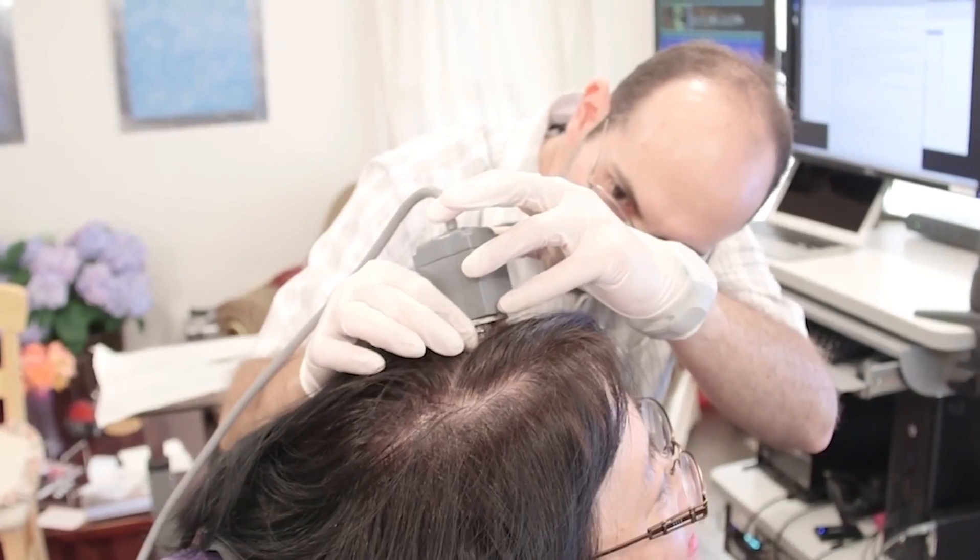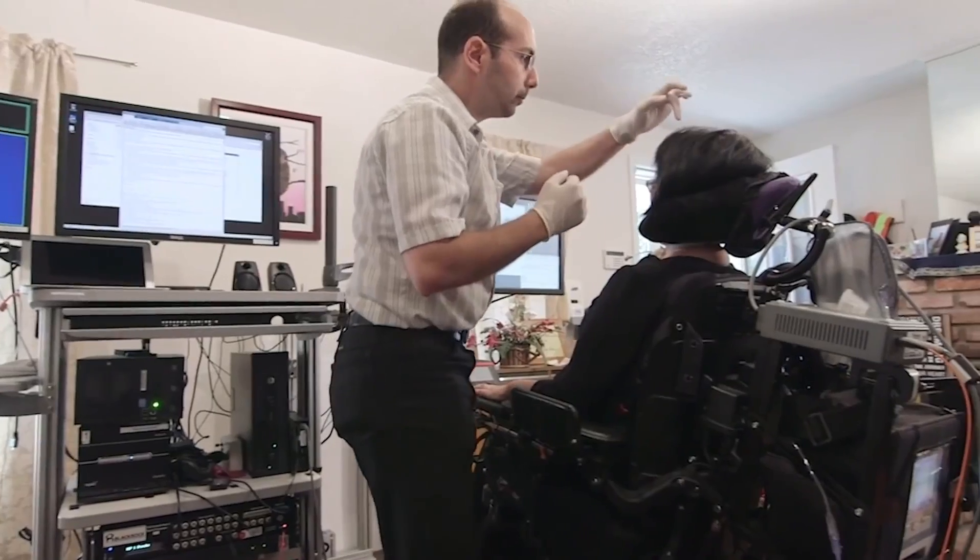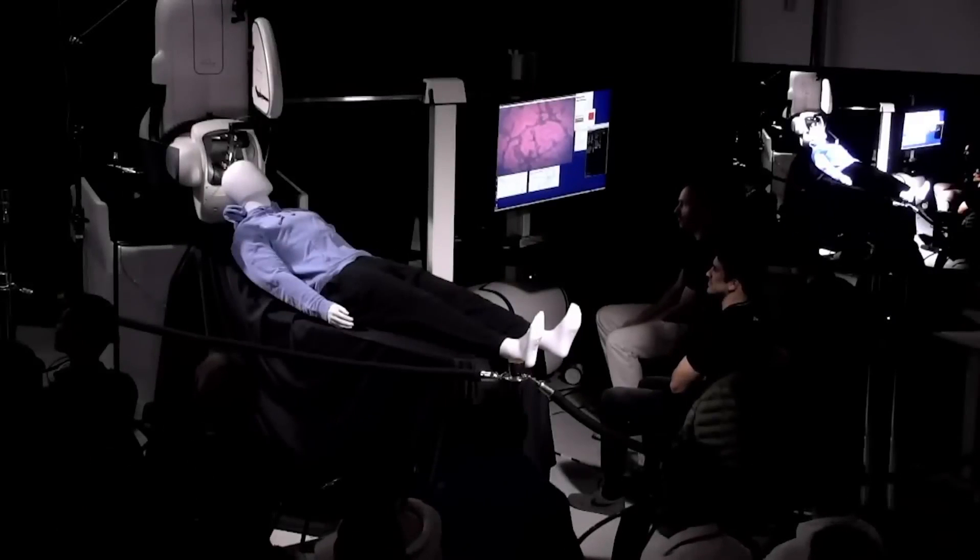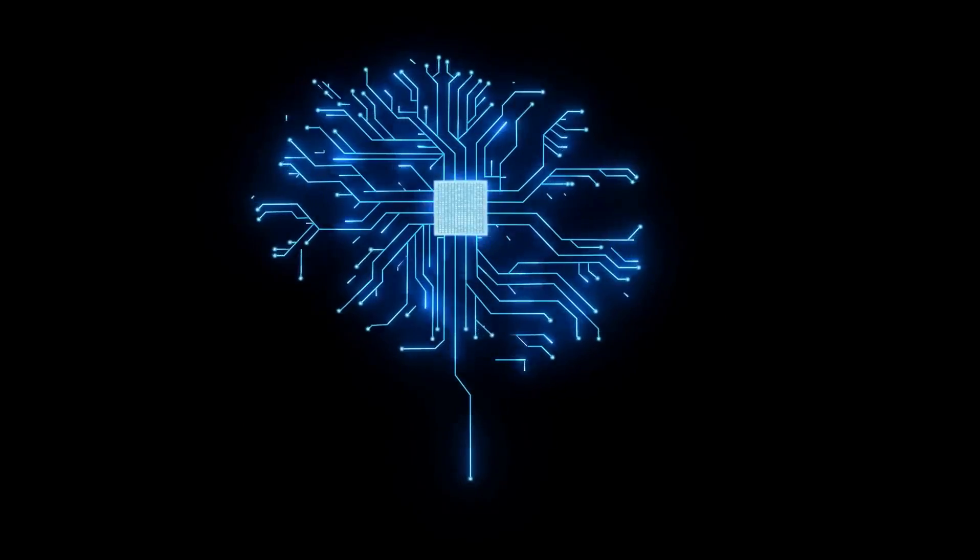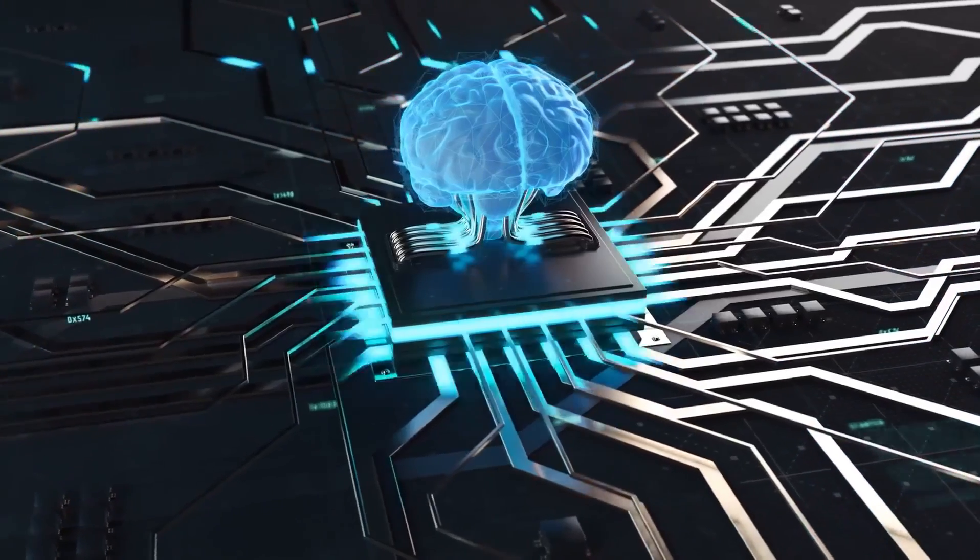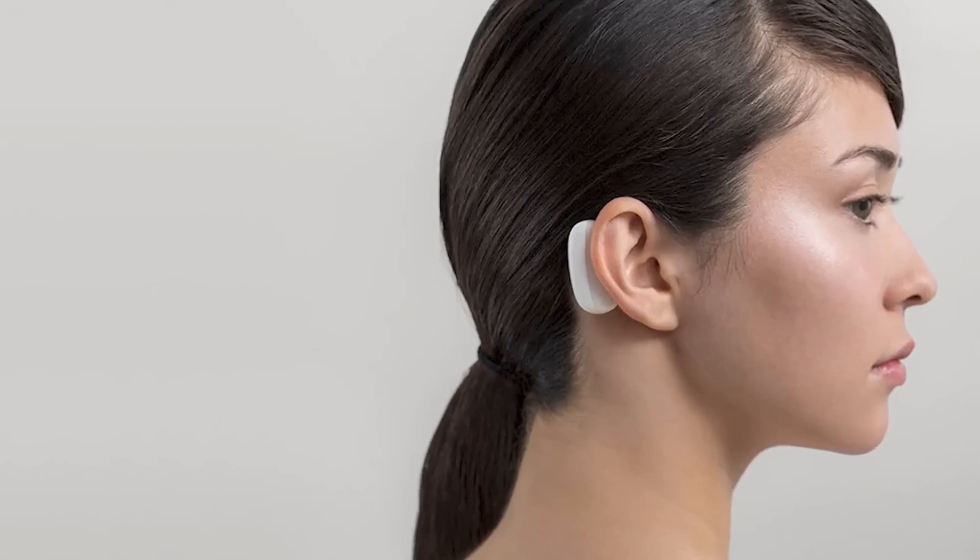Building upon this foundation, Neuralink unveiled its first prototype BCI, called the N1-Link, in 2019. The N1-Link utilizes a small chip with numerous electrodes that are implanted into the brain, enabling bidirectional communication. The device aims to help individuals with neurological conditions regain lost functionalities and improve their quality of life.